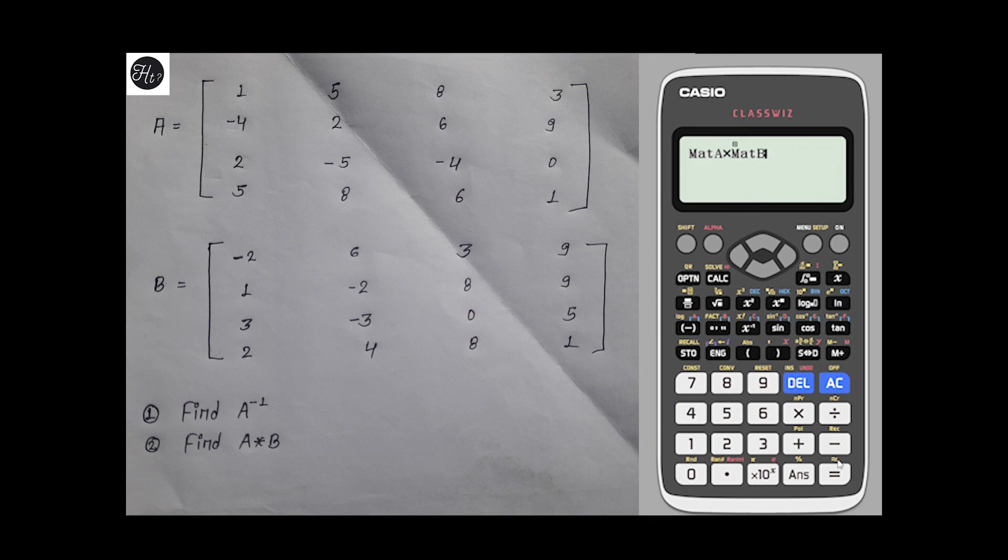Matrix B is 4, and equal to. This is the required value of multiplication of matrix A and B. Thank you guys.